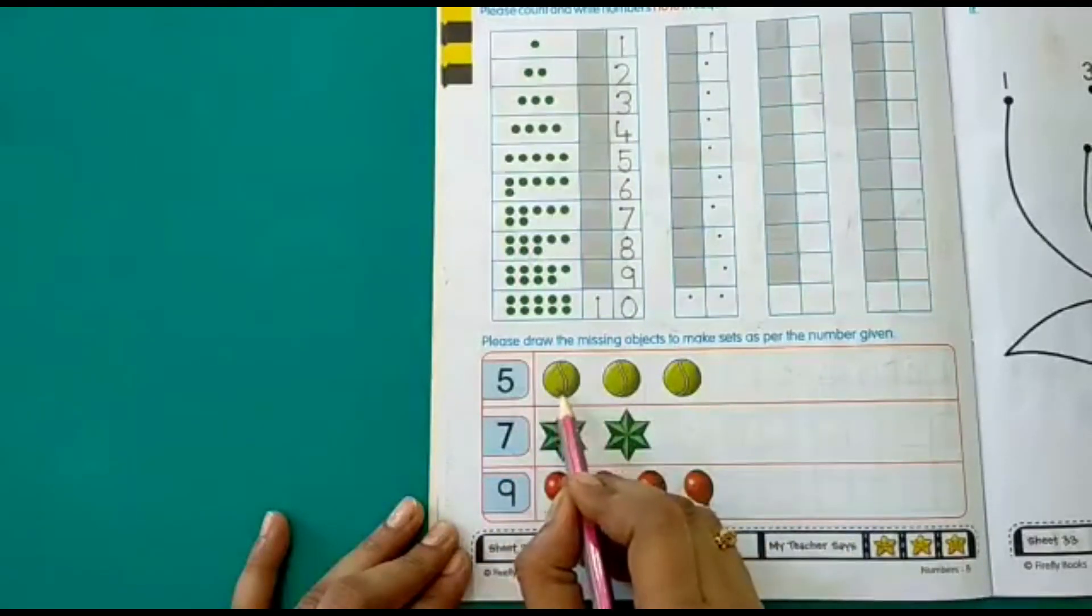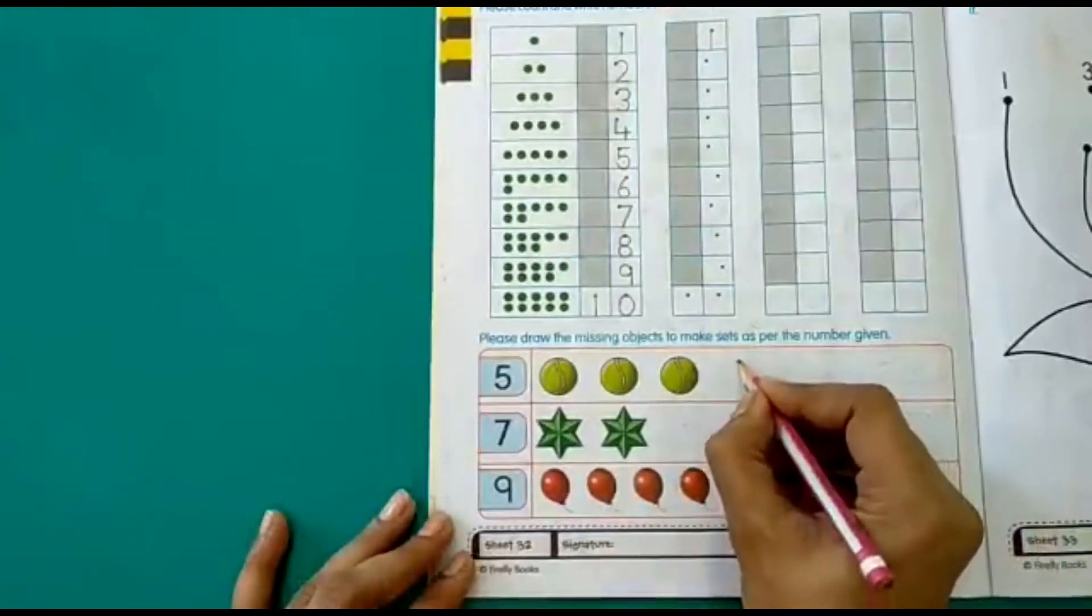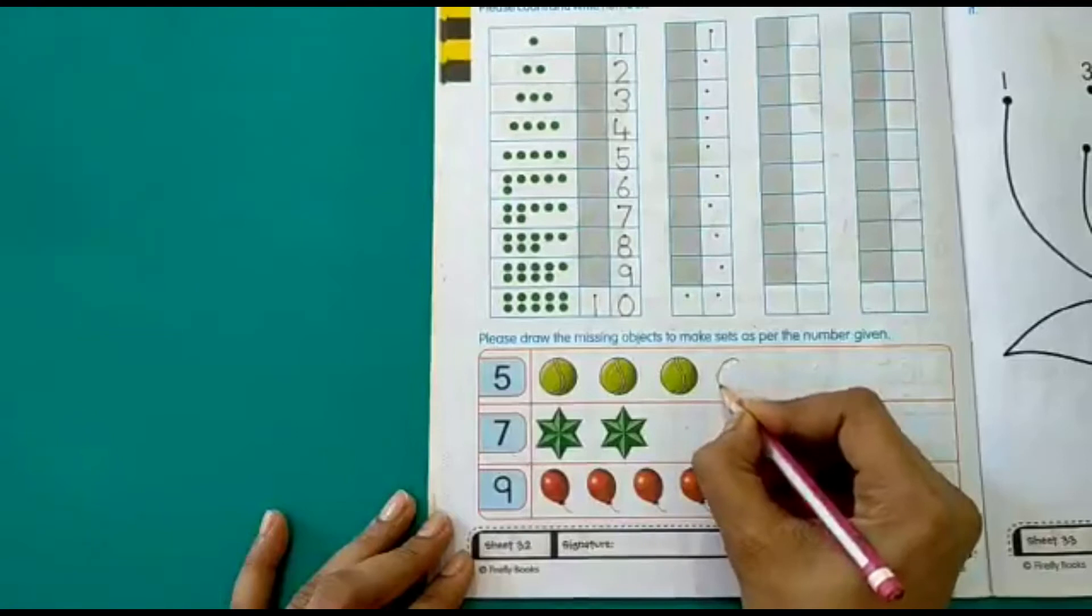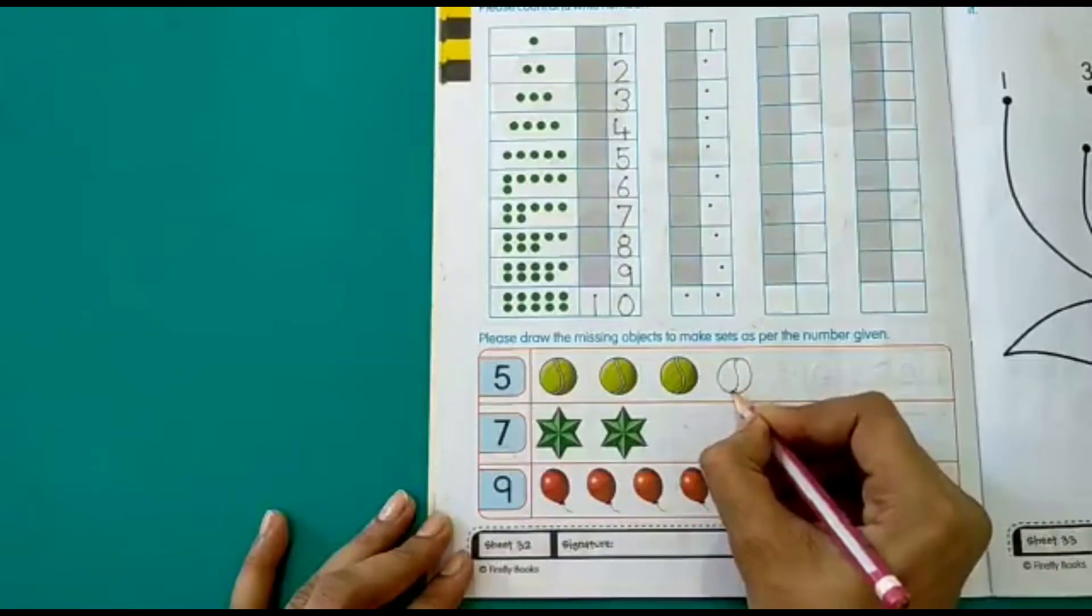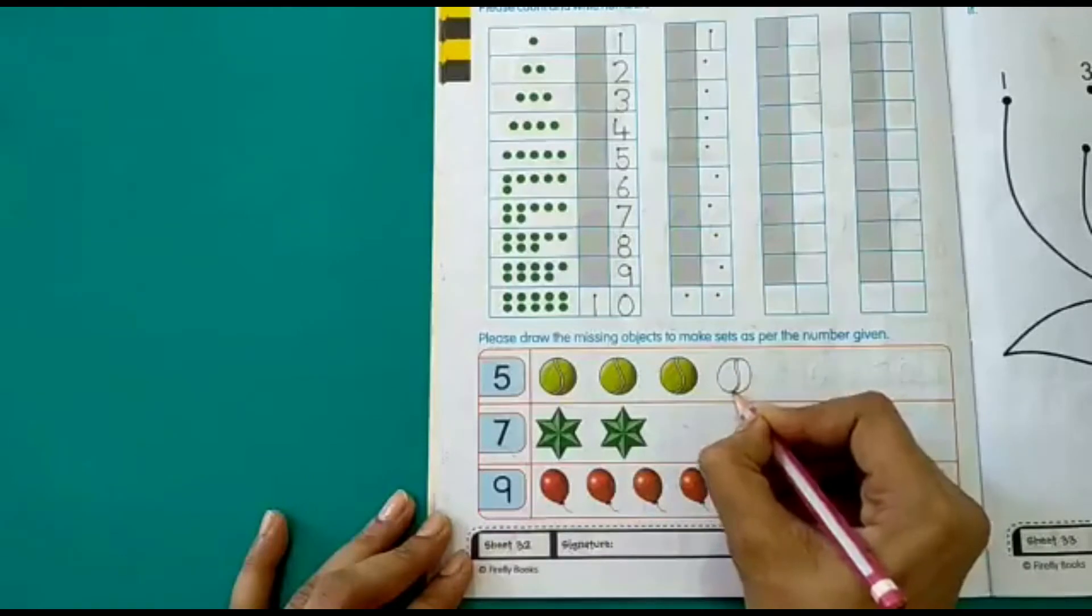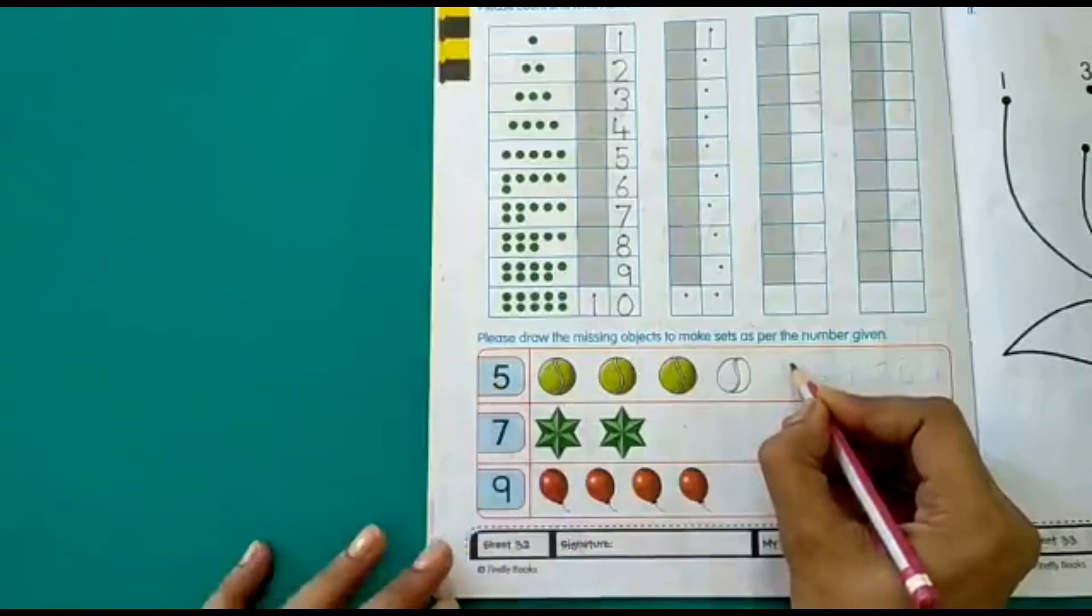So we have already 1, 2 and 3 ball here. So let's draw the 4th ball. Number 4. 4th ball. So this is my number 4 ball. And 1 more ball we have to draw to make the number 5.